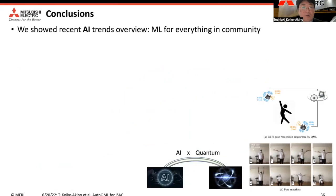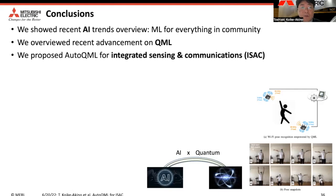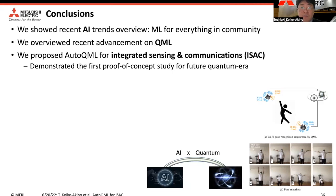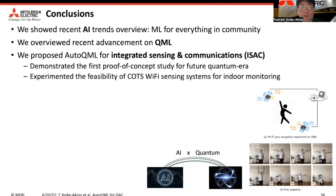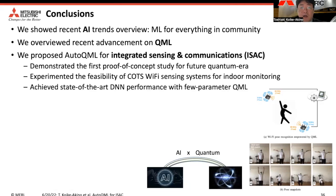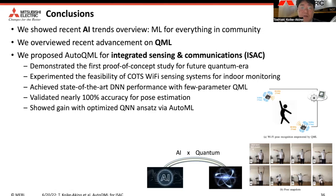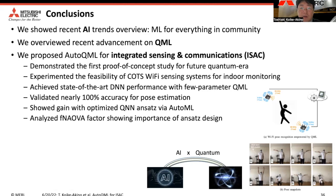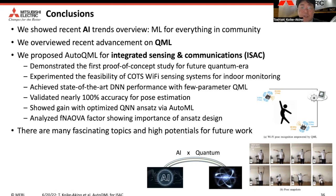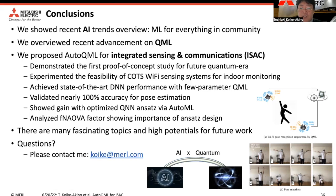To conclude: we reviewed recent AI trends and overviewed the recent advancements of quantum machine learning. We proposed AutoQML for ISAC, showing the first proof-of-concept study of quantum applications. We demonstrated the feasibility of a commercial off-the-shelf Wi-Fi sensing system for human monitoring, achieving state-of-the-art performance using fewer-parameter quantum neural networks — showing nearly 100% accuracy. We verified gains through AutoML-optimized QNN ANSATZs and analyzed a novel importance factor highlighting the significance of ANSATZ design. There are many fascinating open topics and high potential for quantum machine learning in future work. Thank you so much.